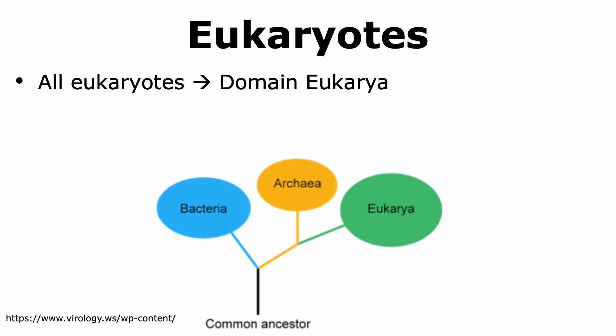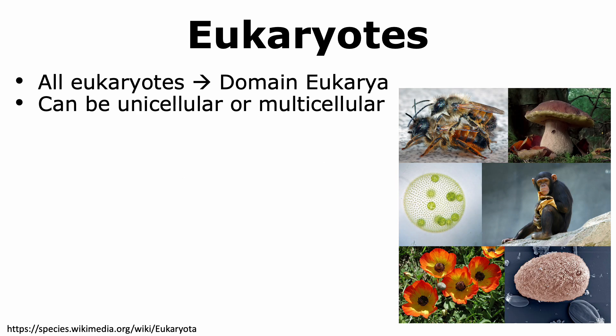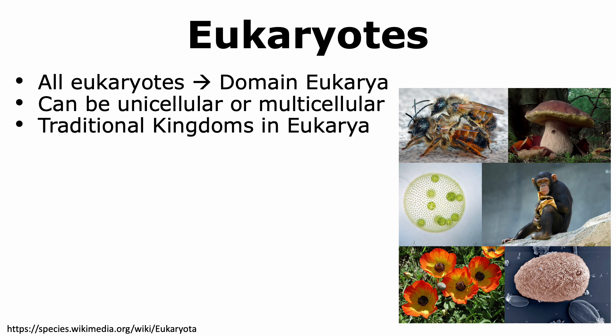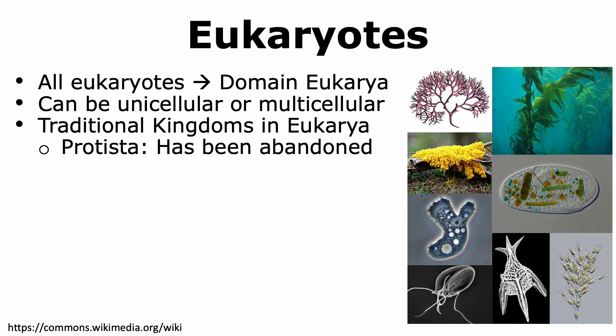All eukaryotes are grouped in the domain Eukarya. There is immense diversity among eukaryotes — some are unicellular, while others are multicellular. There are four traditional kingdoms in the domain of Eukarya. The first one is Protista. The organisms that belong to this kingdom, which has now been abandoned, are protists. The reason it has been abandoned is because the members are genetically very variable from one another.